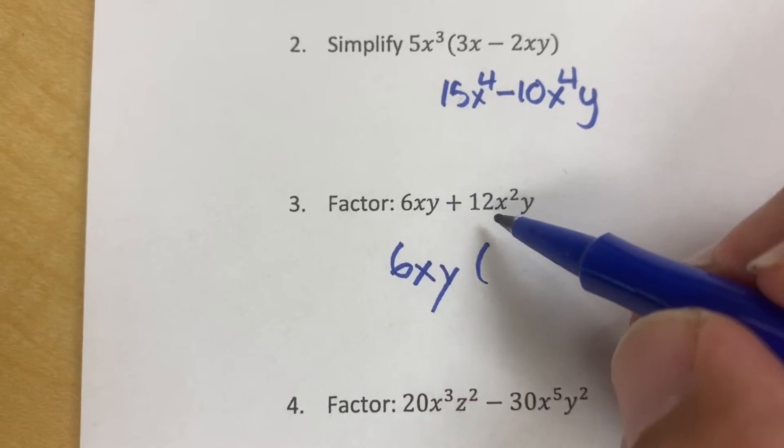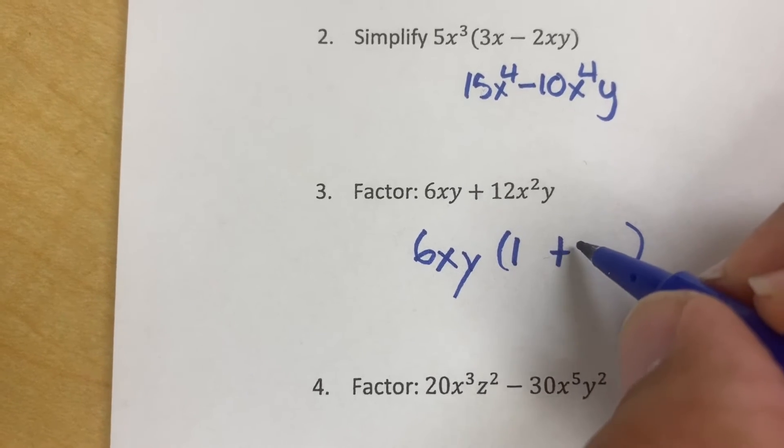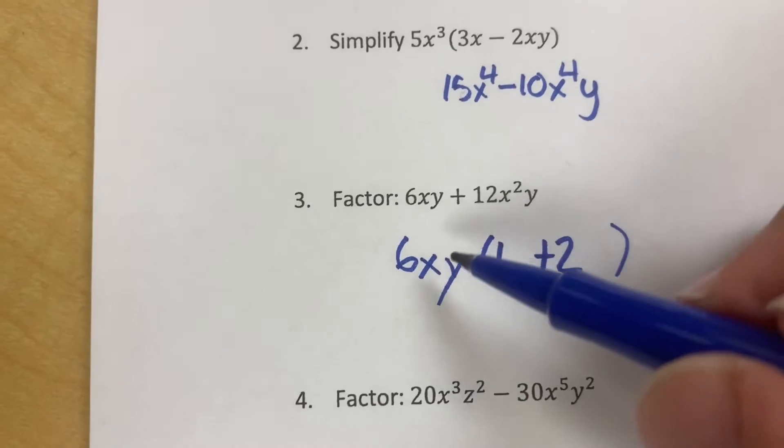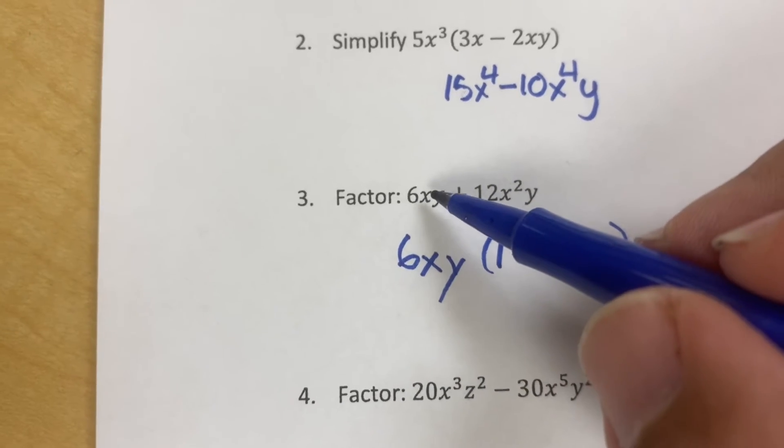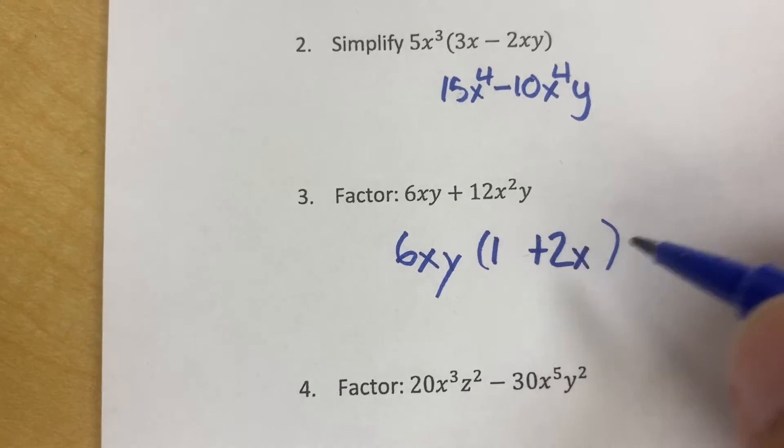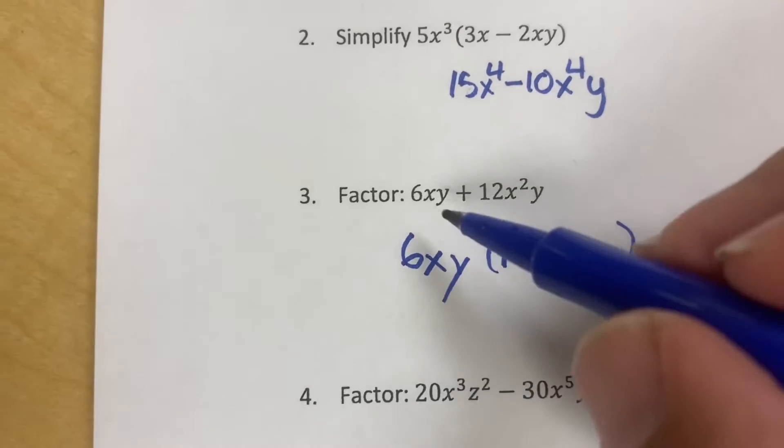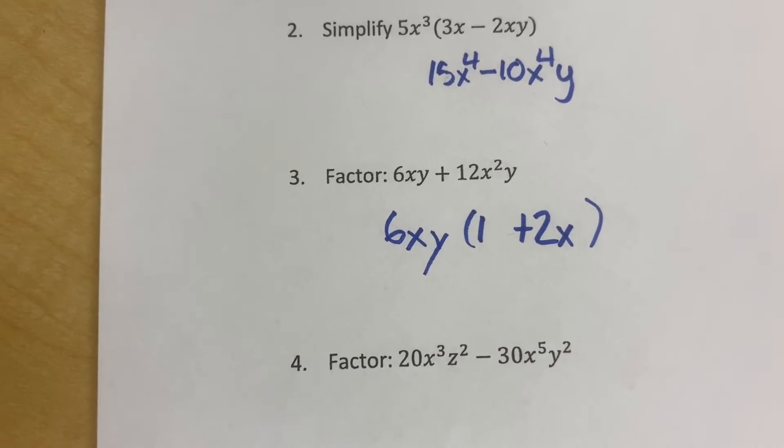Now, here we go. So if I divide everything by 6, I'm going to have a 1 here. I'm going to have a plus sign here, and I'm going to have a 2 there. If I take away an x from each one of these, this one's left with no x's, and this is left with just 1. So I'm going to leave an x right here. And if I take 1 y away from everything, I'm left with no y's. So there's my final answer.